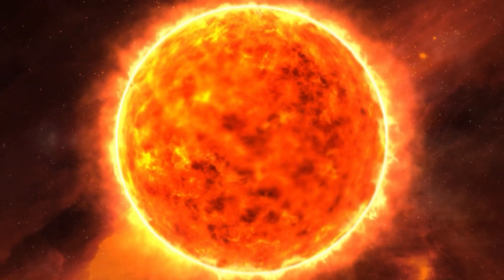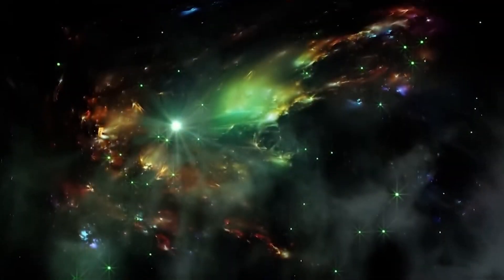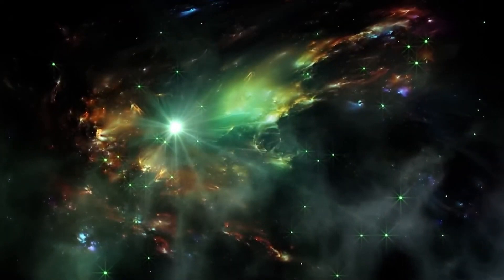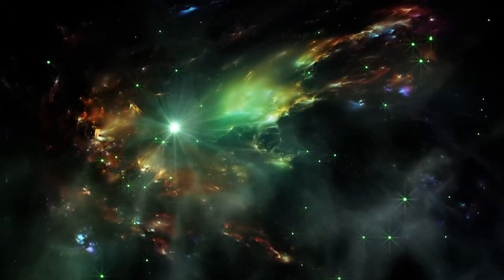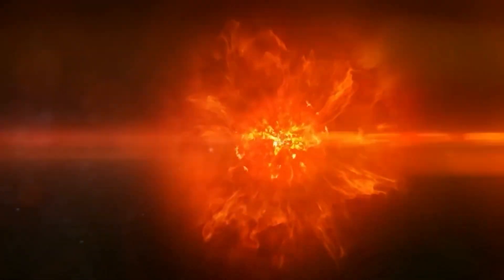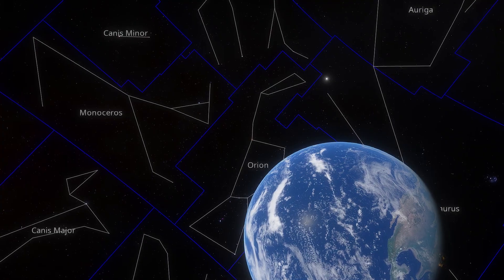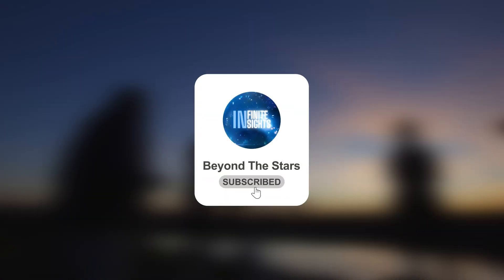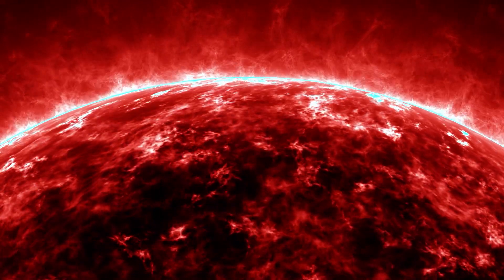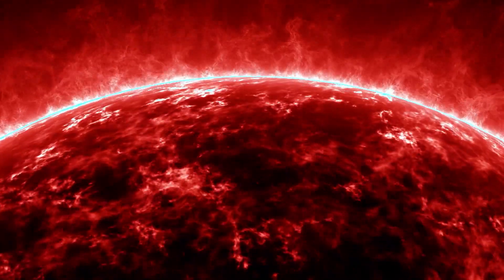These events have led to speculation that this star is on the verge of a supernova. But what if what we are witnessing is actually the beginning of an even more terrifying event? What if Betelgeuse is not about to explode, but to collapse in on itself? Join us on this journey to the shoulder of Orion's warrior to analyze in detail these changes in Betelgeuse and the possible consequences for Earth.